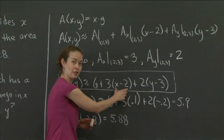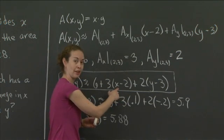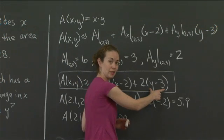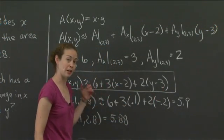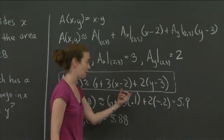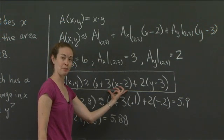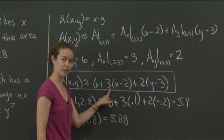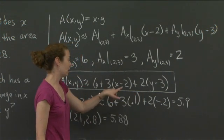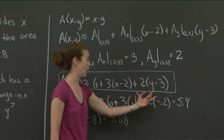OK. This value will represent the change in x. So we started at 2, and we go somewhere, and that'll represent the change in x. This value represents the change in y. So if we look at which has a greater impact near 2,3, if my change in x and my change in y are equal, then obviously this term has a bigger impact, because there's a 3. The coefficient here is 3, and the coefficient here is 2. And so the point is, changes in x will have a greater effect than changes in y.